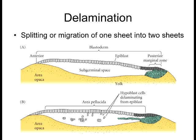Delamination is when one sheet of epithelial cells splits and becomes a second sheet of epithelial cells. In the chicken, cells are technically ingressing, but then they form another sheet of epithelial tissue — which is what delamination is. Think of laminate paper: you have two sheets. Delamination is where one sheet of cells splits and essentially becomes two sheets. The cells can either migrate or simply split to become two entirely separate sheets.